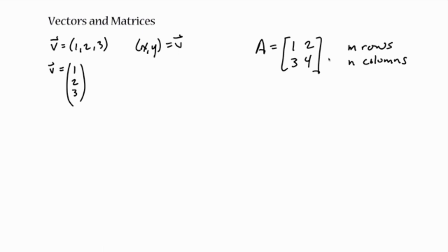For both vectors and matrices, you might want to have a way to refer to the elements that are inside them. Usually for matrices you use whatever capital letter the matrix is named for and use the lowercase version of that, then give it subscripts to say which element in the matrix you mean. Rows count from the top down, columns count from left to right.